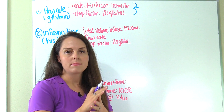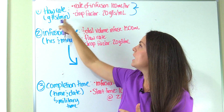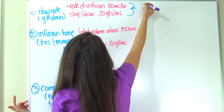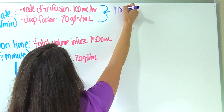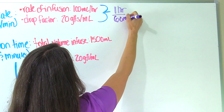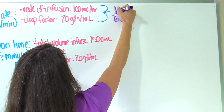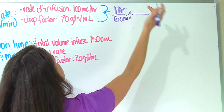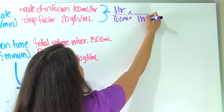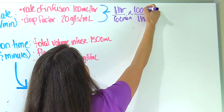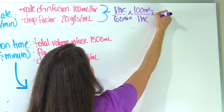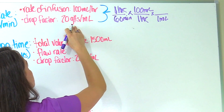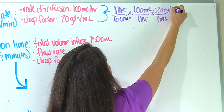The very first thing I want to do is get my converting out of the way because we have to get to drops per minute. Our information from our problem is in hours — milliliters per hour — so I'm going to start out with that. We know from the conversion table that one hour equals 60 minutes. Now let's plug in our information. Our rate of infusion: one hour is going to give us 100 milliliters of fluid, which cancels out hours. Now let's plug in our drop factor: one milliliter gives us 20 drops, which cancels out milliliters.